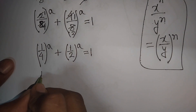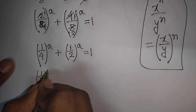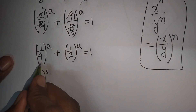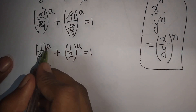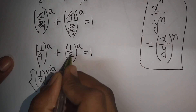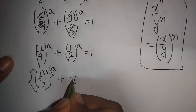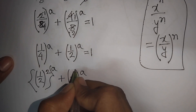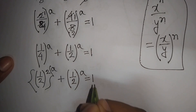Now 1 over 4 can be written as 1 over 2, the whole bracket raised to power 2. So the first bracket (1/4)^a can be rewritten as (1/2)^2, raised to the power a. Plus (1/2)^a is equal to 1.